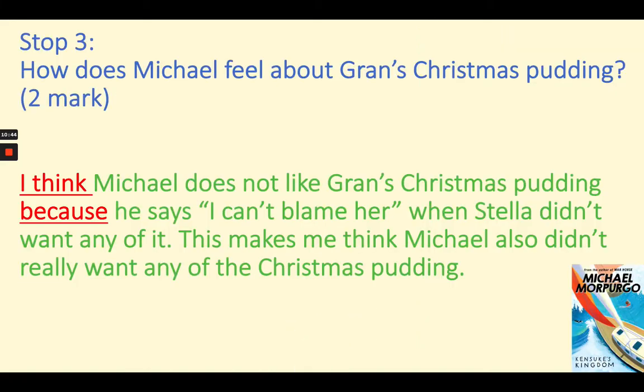Let's take a look at what I said. I think Michael does not like Gran's pudding — that's my first mark. Now I'm going to give you evidence to get my second mark. Because he says he can't blame Stella when she didn't want any of it. This makes me think Michael also didn't really want any of the Christmas pudding.